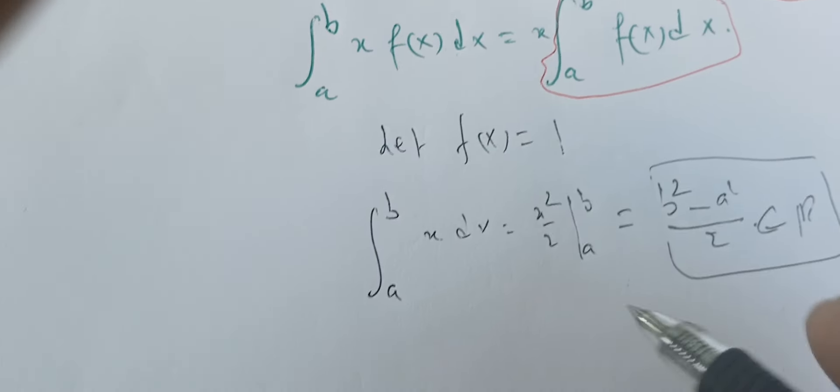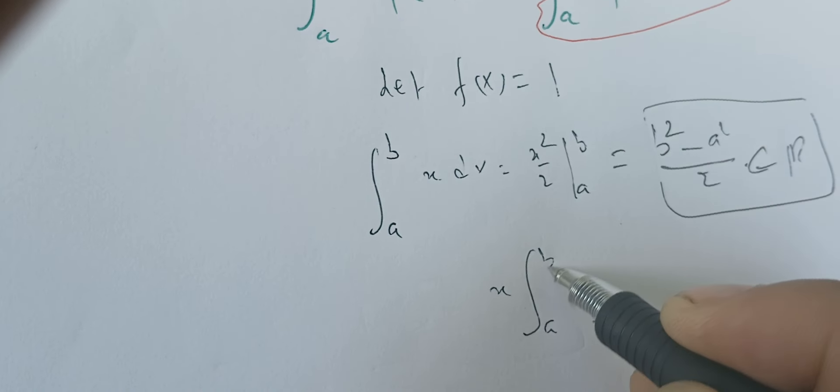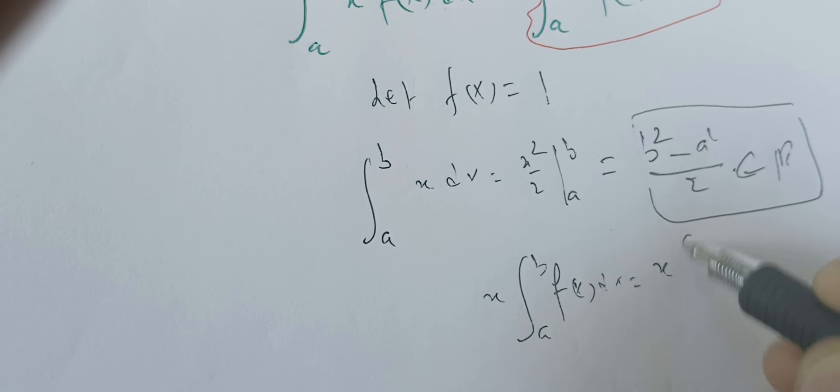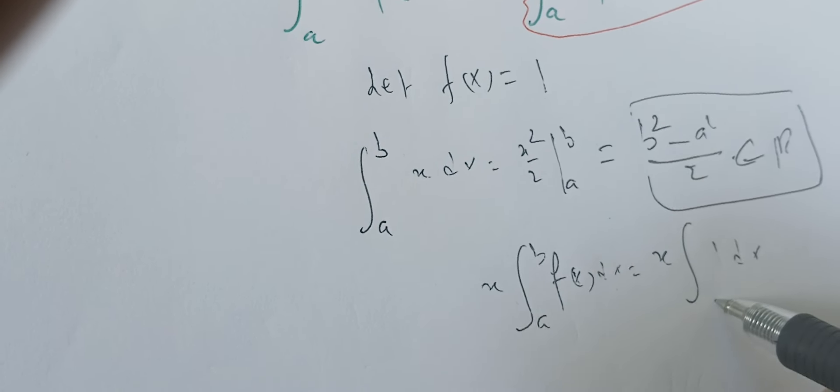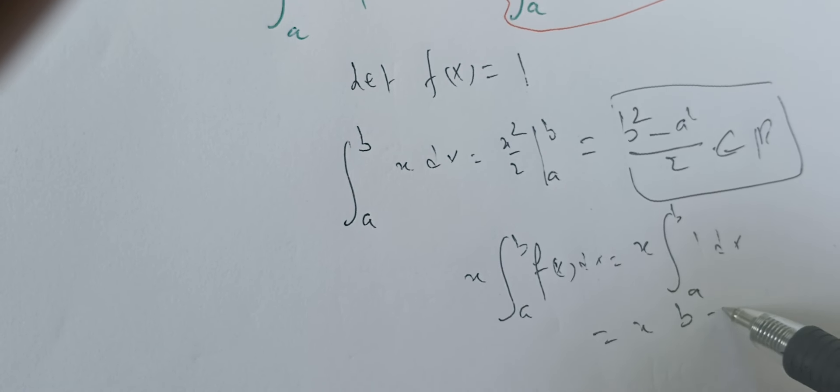On the right side, we have x times the integral of f(x) dx, which is equal to x times the integral of 1 dx between a and b, and this gives us x(b minus a).